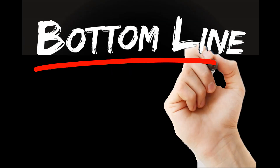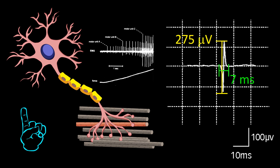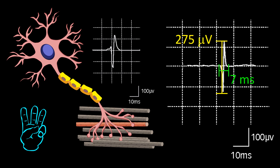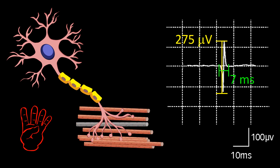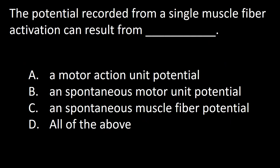The bottom line is that in pathological circumstances a potential arising from a single muscle fiber — having all the characteristics of a muscle fiber potential, an amplitude less than 300 microvolts and a duration of about seven milliseconds — can be the expression of a motor unit action potential, the basic component of a spontaneous potential such as those found in neuromyotonia, or the sole expression of a spontaneous potential as seen in some fasciculations. Yet, it can also be the result of a denervated muscle fiber as represented in this frame, corresponding to a fibrillation. So the answer to this question is D.